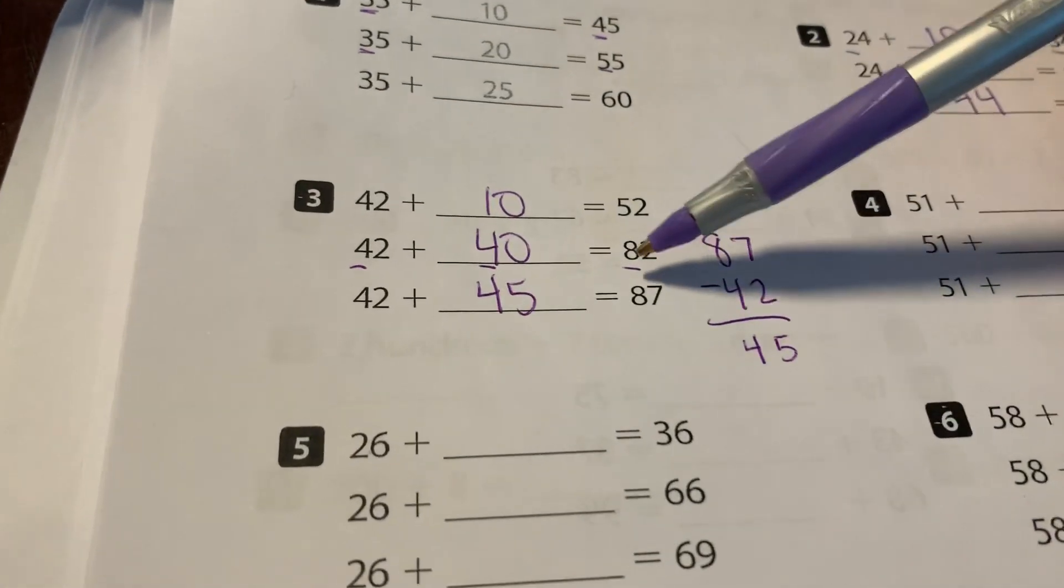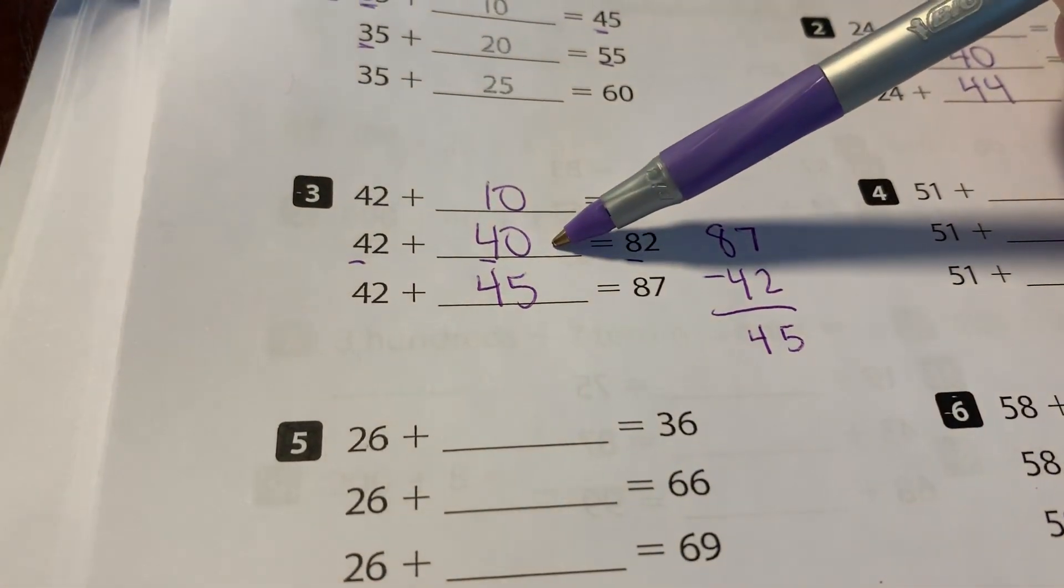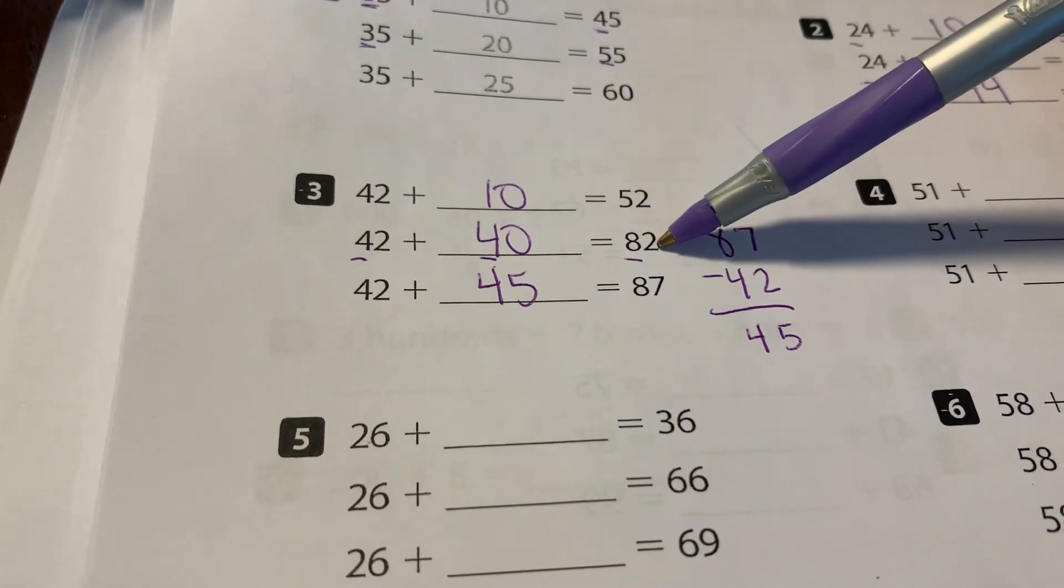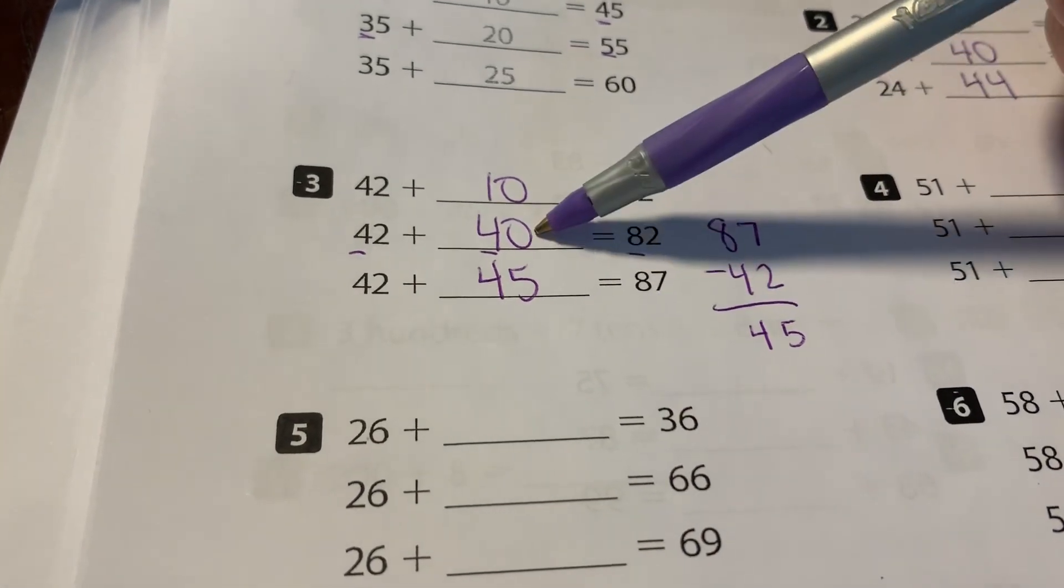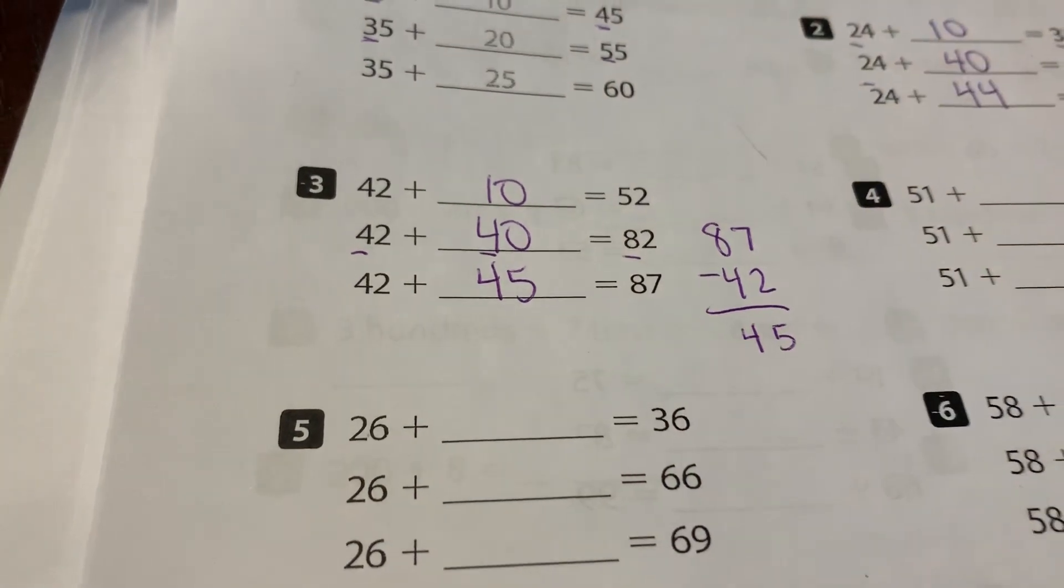But notice our strategy. I already added 40 to get 82. 82 plus five more is 87. So I just had to put a five in my ones place.